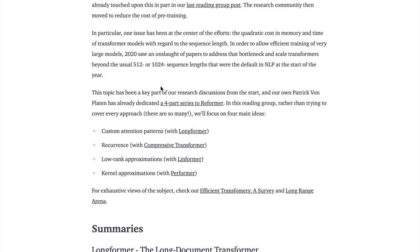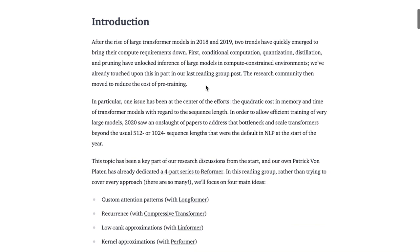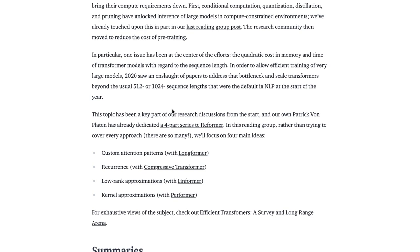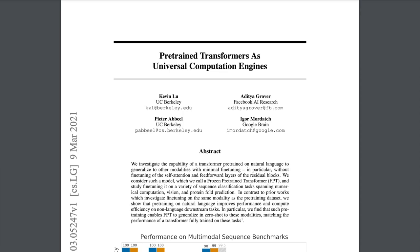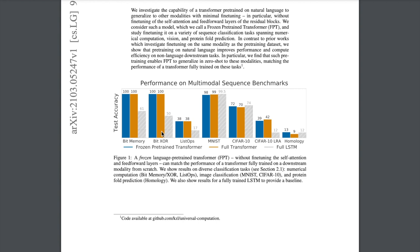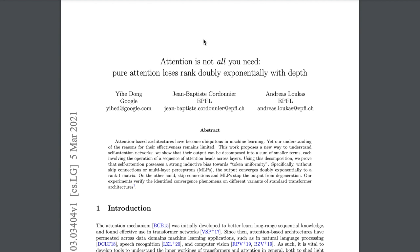From the Hugging Face team, there's a group of paper summaries on efficient transformer design and reducing the cost of pre-training, covering things like the Longformer, Compressive Transformer, Linformer, and Performer. We also have pre-trained transformers as universal computation engines — pre-training a transformer and seeing if it can perform other tasks including image classification on CIFAR-10 and MNIST using a transformer trained with language modeling. We'll also look at 'Attention is Not All You Need,' deconstructing the overall transformer block including skip connections, multilayer perceptrons, and layer normalization.